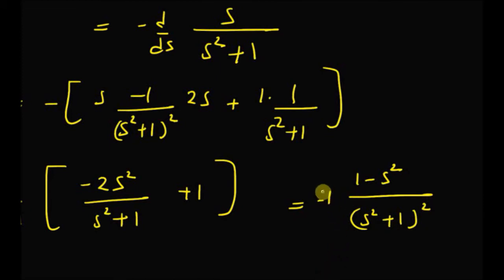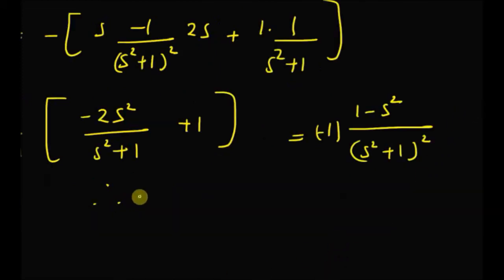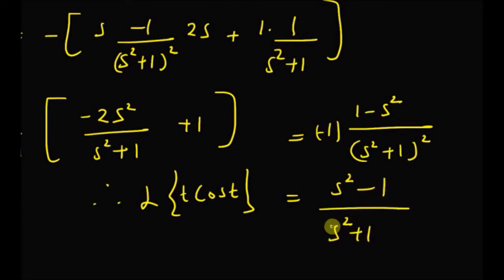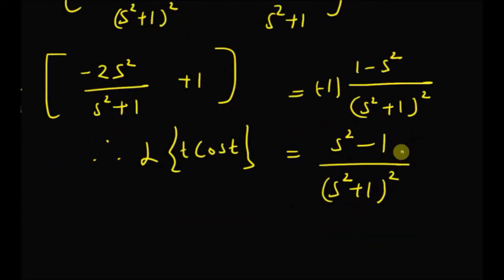After simplification, the numerator is s² − 1. Therefore, the Laplace transform of t · cos(t) is equal to (s² − 1)/(s² + 1)².